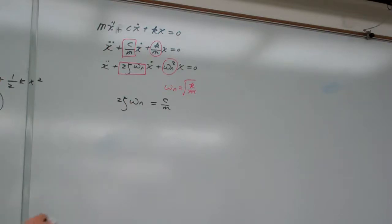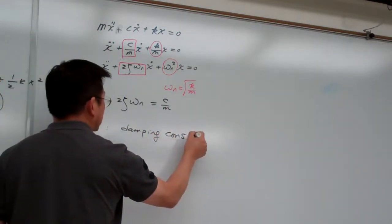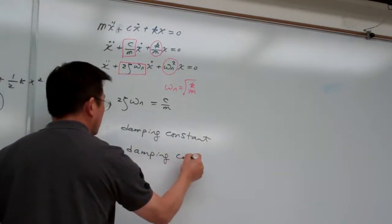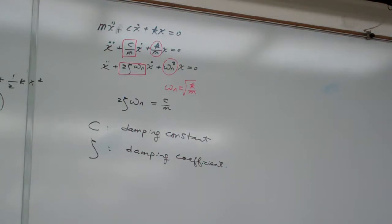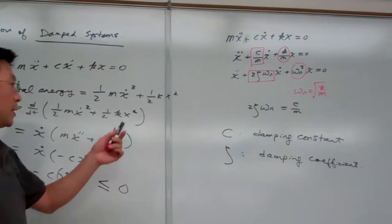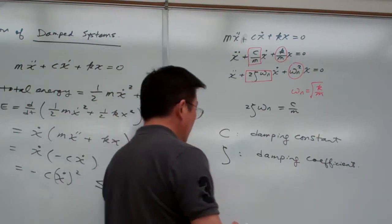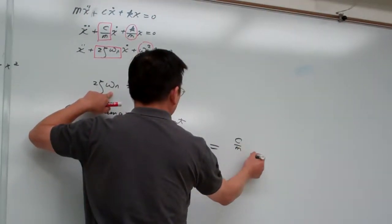This new term: 2·zeta·omega_n from this comparison equals c/m. So we have two terms: c is called the damping constant, and zeta is by definition given the name damping coefficient. From the given values of k, c, and m, for the first step of solving a damping system problem you need to find the value of zeta.